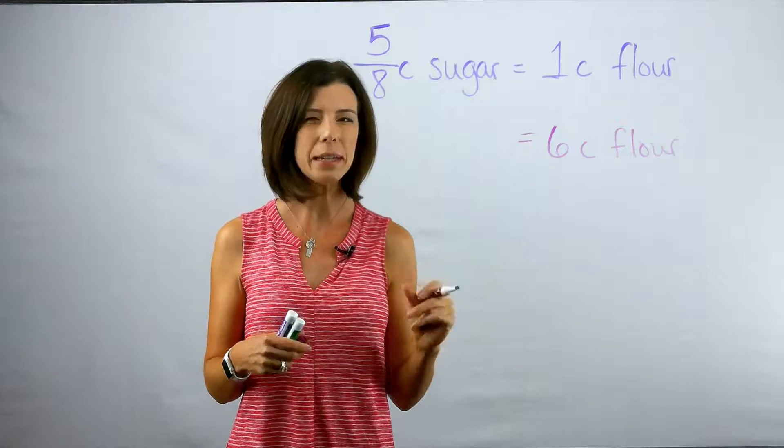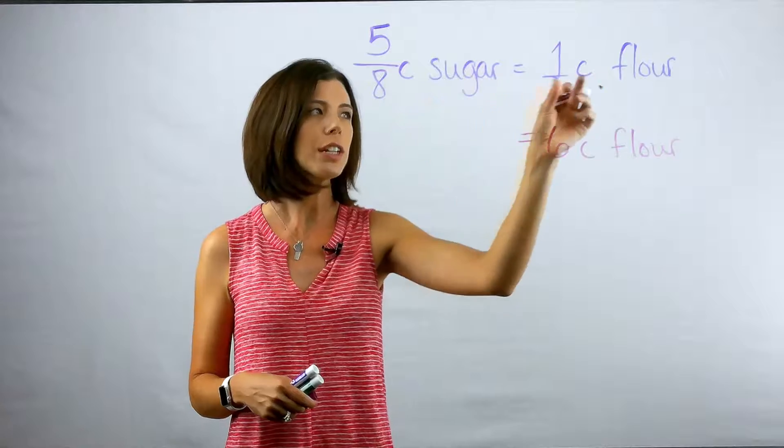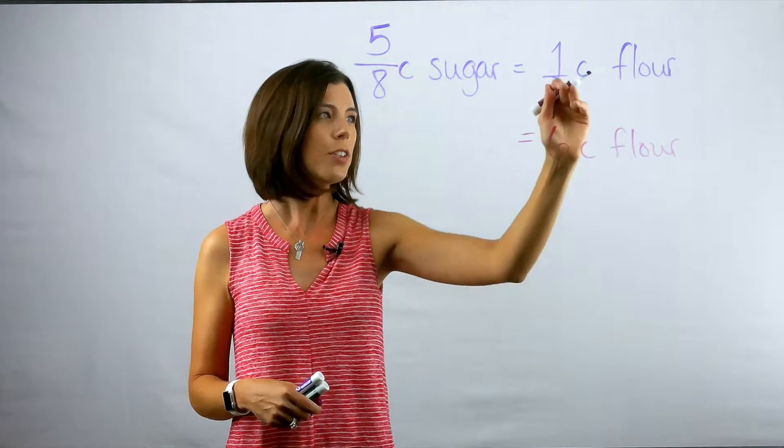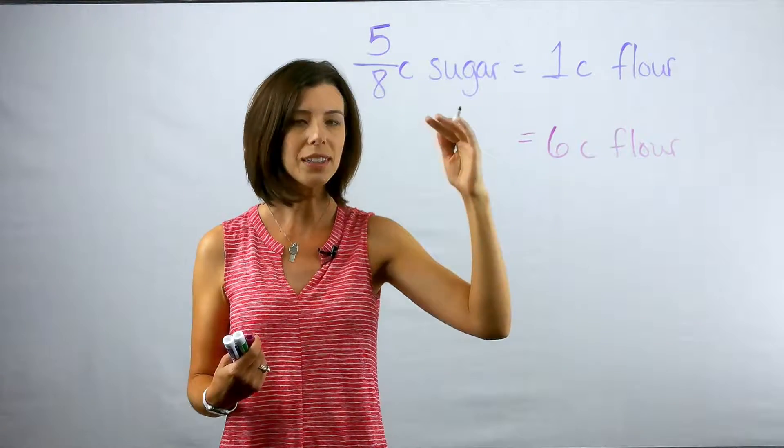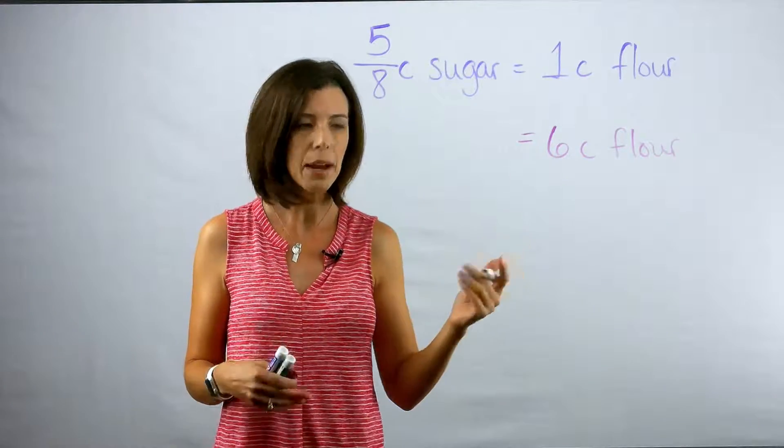So let's just think about this in terms of copies. If I know that five-eighths cup of sugar is one cup of flour and I know that I need six cups of flour, really I just need six copies of my five-eighths cup of sugar, right?